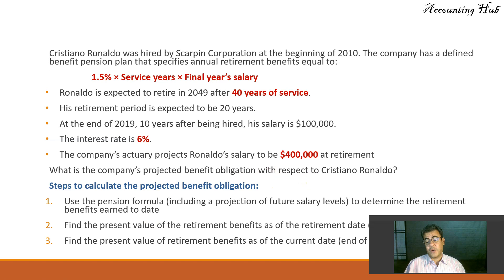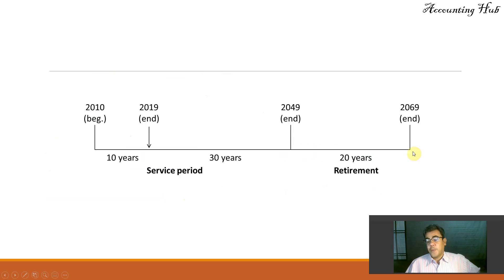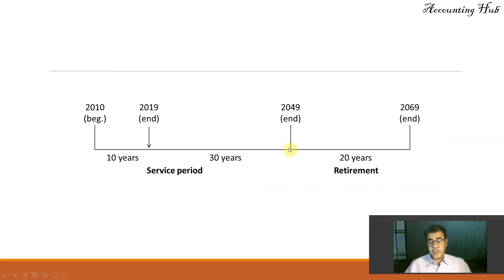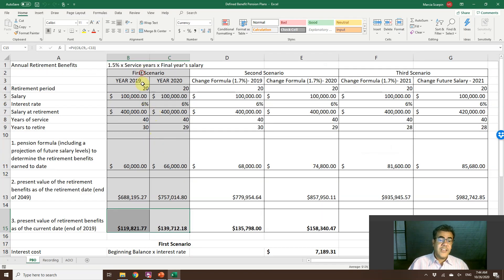What is the company's projected benefit obligation with respect to Cristiano Ronaldo? We have a video about how to calculate it, so we'll go very fast here. Basically, he will receive money for 20 years on a yearly basis, so we need to bring this to a present value when his retirement starts. However, we don't want the liability in 2049 — we want it at the end of 2019, so we need to bring it to a present value as well.